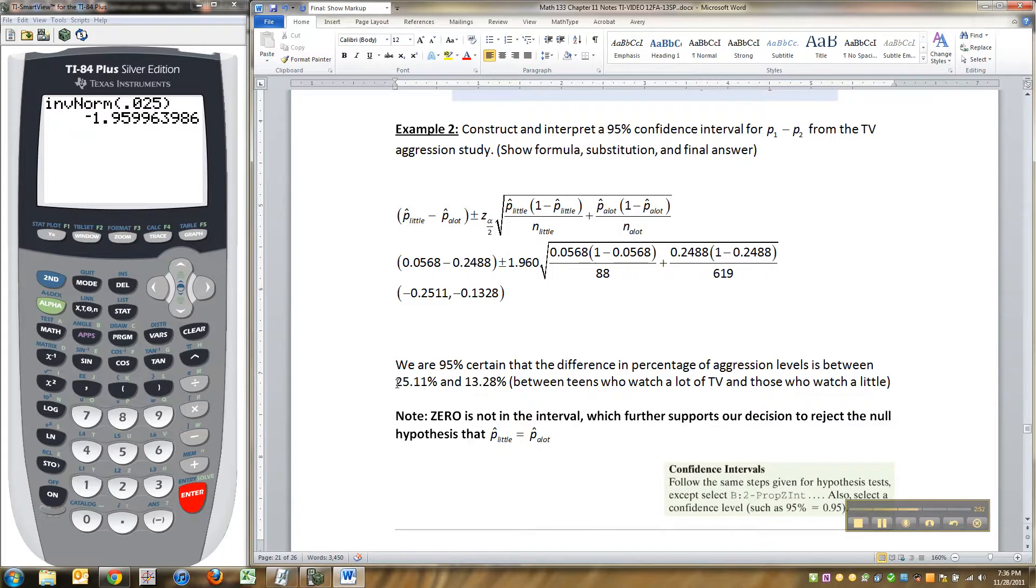And that further backs up our decision that we made when we hypothesis tested this, which was to reject the null hypothesis. If they were equal, then their difference would be equal to 0, and then you'd have 0 in the middle of your interval. But because you don't, that's more reason to reject your null hypothesis.